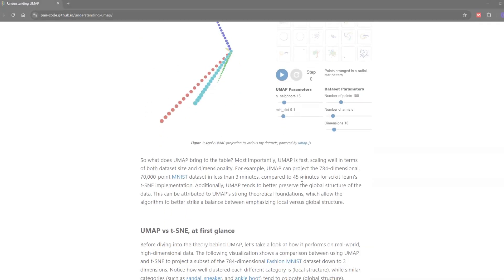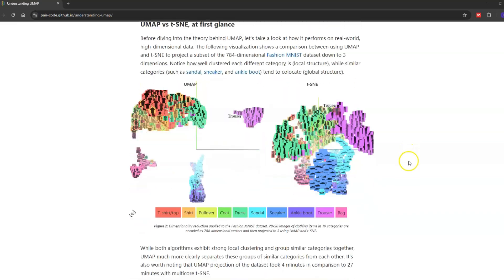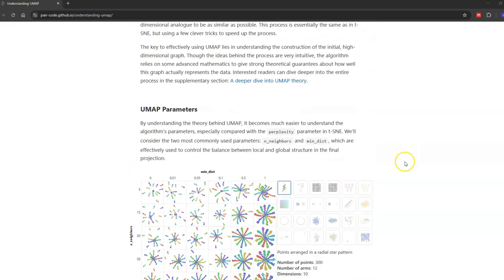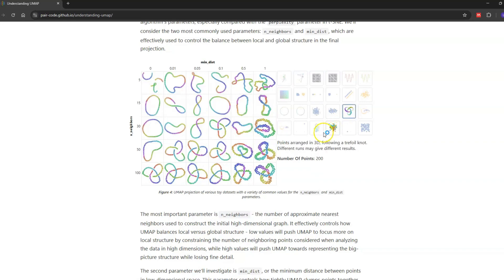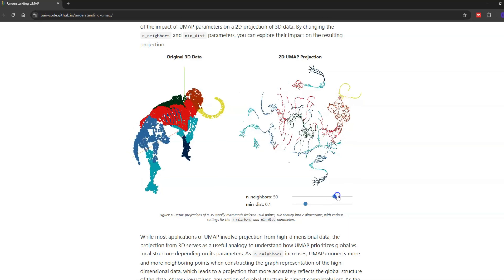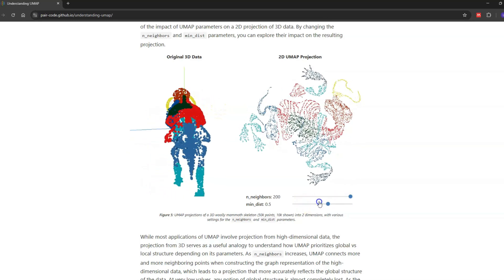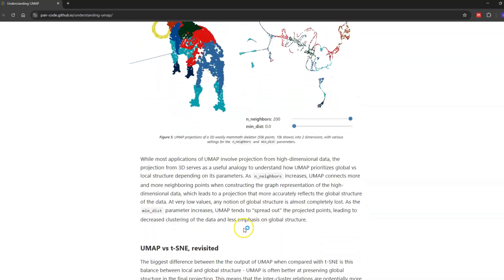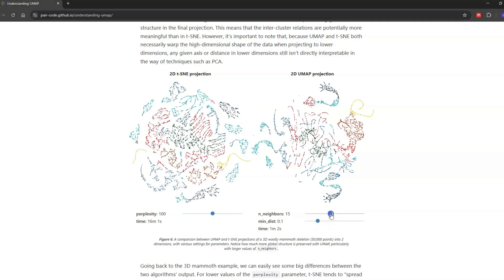You can play around with these parameters and how they affect the 2D UMAP plot by visiting this web page. It's really cool. You have a 3D woolly mammoth skeleton made up of points colored by their location space and the UMAP projection of those points, which you can alter based on the parameters. It also has a beautiful comparison between TSNE and UMAP, so highly recommend it.